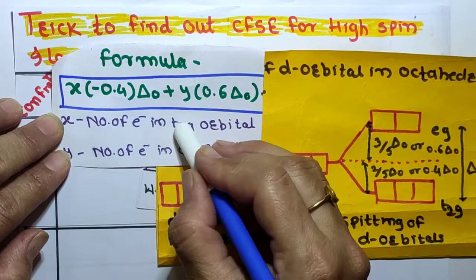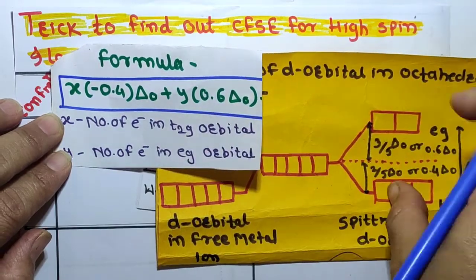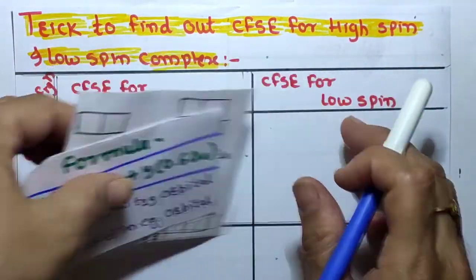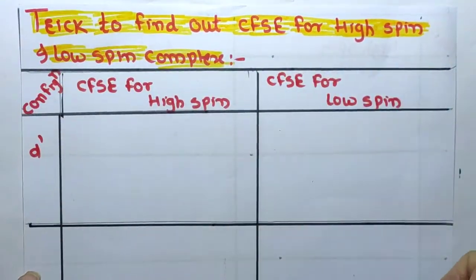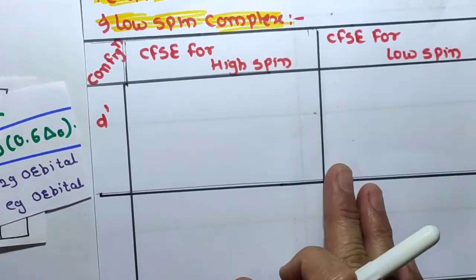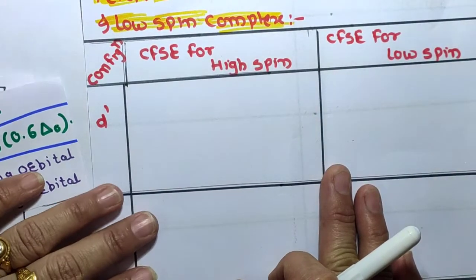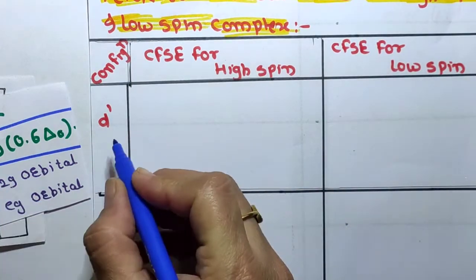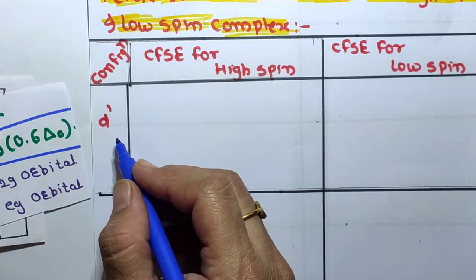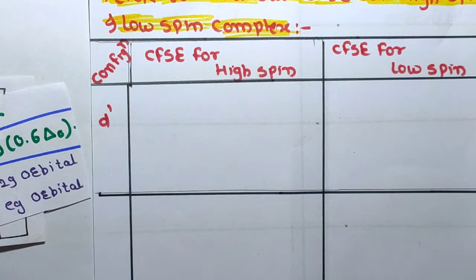By using this formula we can find out the crystal field stabilization energy for d1 up to d10 configurations. Let's start with the d1 configuration.